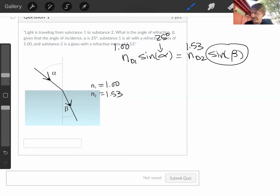We'll have to solve for that. So let's start by getting sine beta by itself. That means we divide by n sub 2, and we get that sine beta equals 1.00 over 1.53 times sine of 25 degrees.